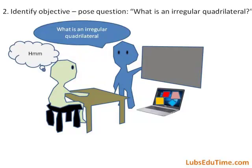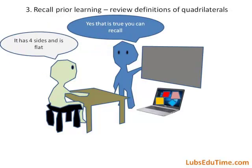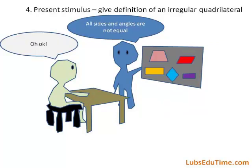Event 2: Identify objective. Pose the question: what is an irregular quadrilateral? Event 3: Recall prior learning. Review definitions of quadrilaterals. Event 4: Present stimulus. Give the definition of an irregular quadrilateral.